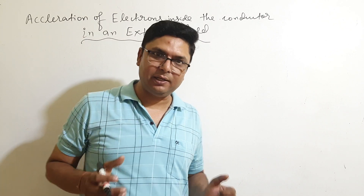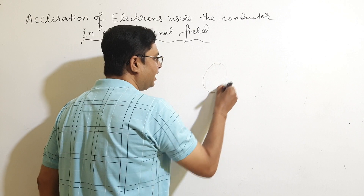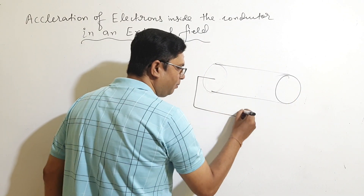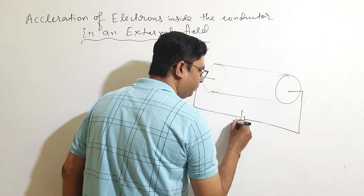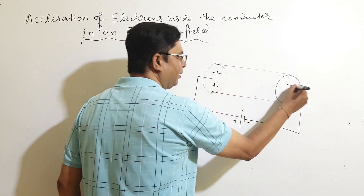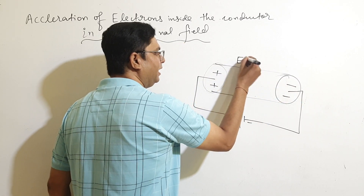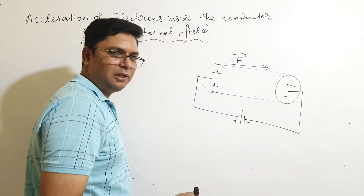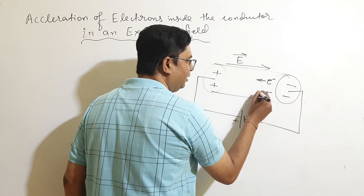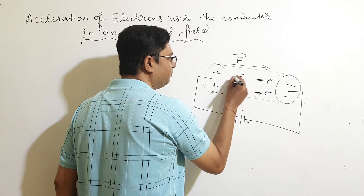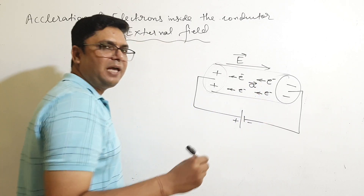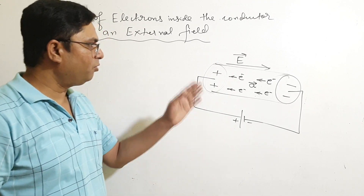Here we have a cylindrical conductor connected with a potential source — a battery. The positive charge accumulates on one end and negative on the other, and an electric field develops from the positive to the negative side. The electrons start moving from the negative end to the positive end. Let the acceleration be 'a'.